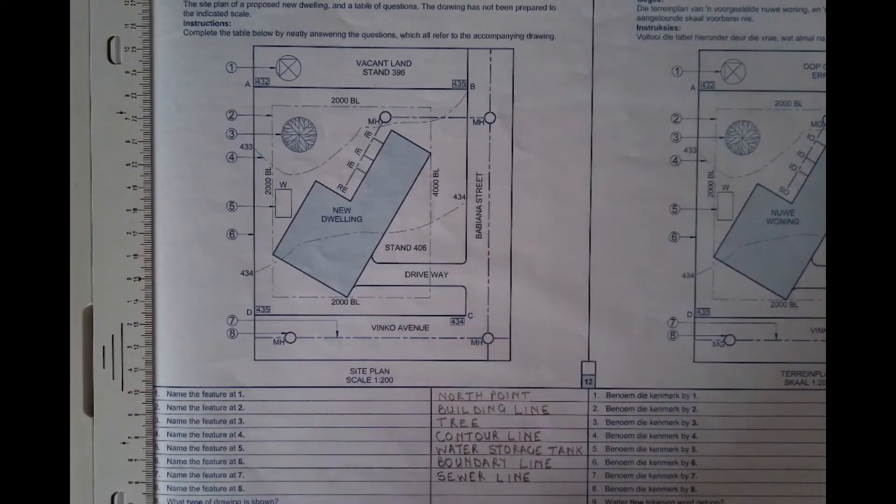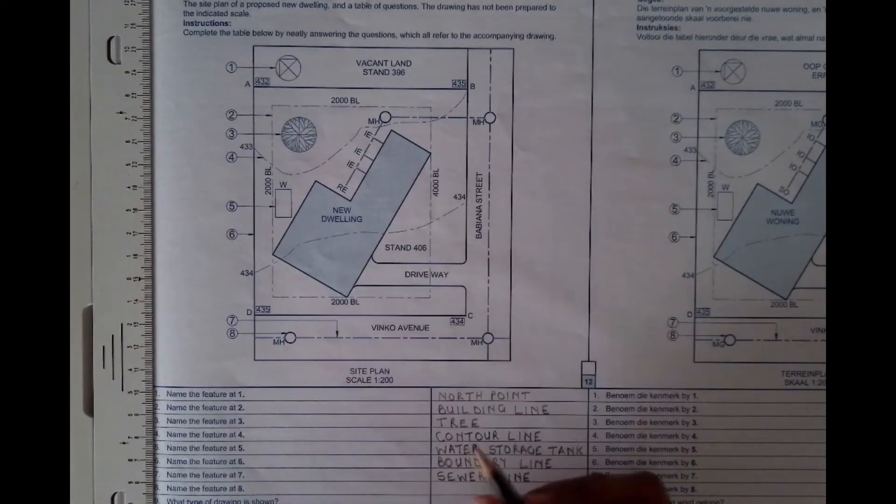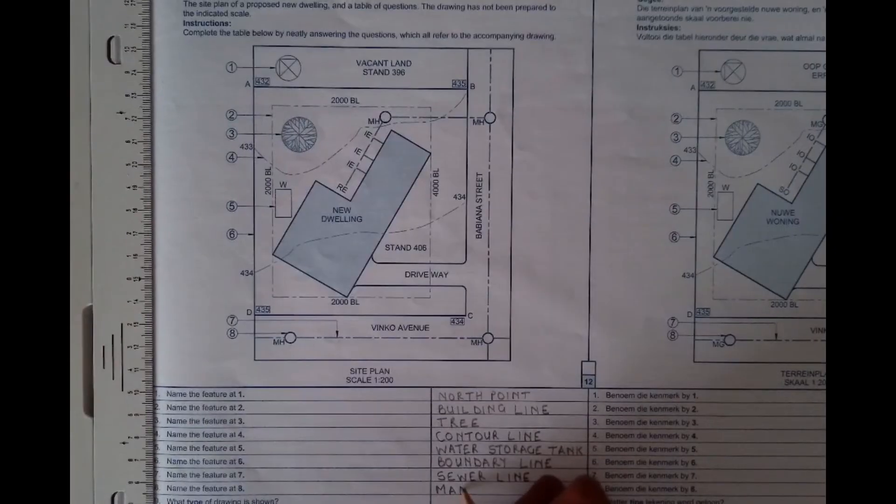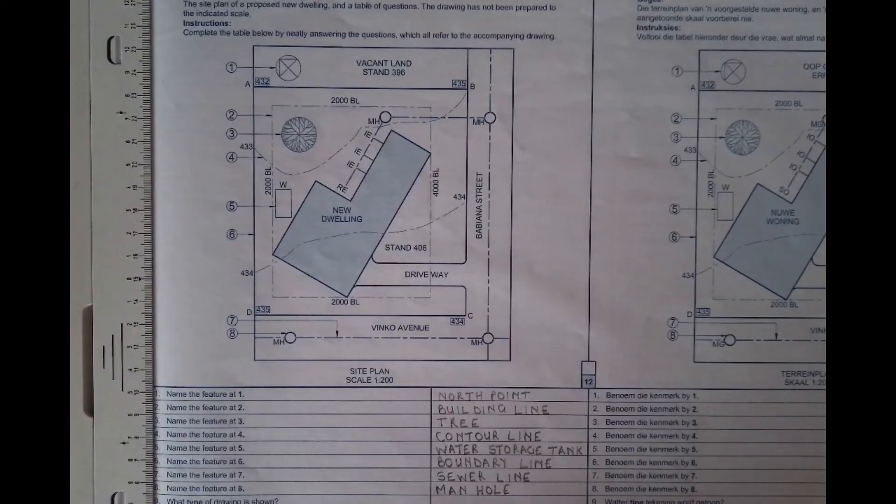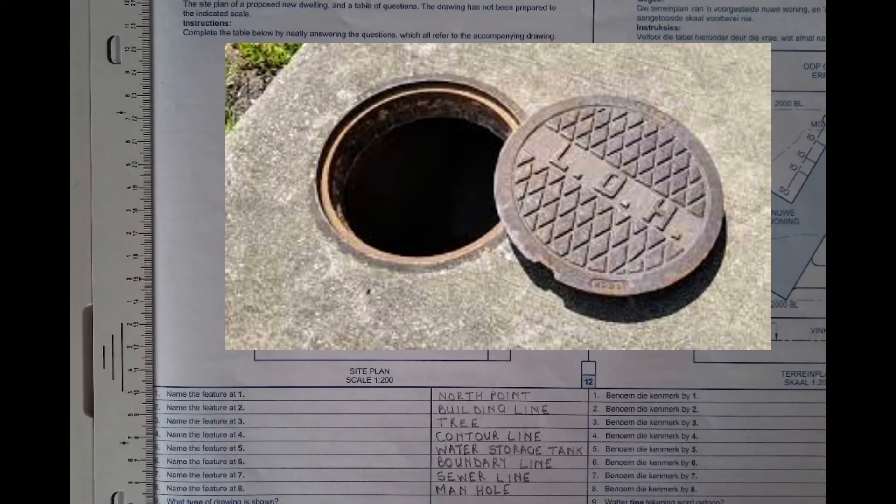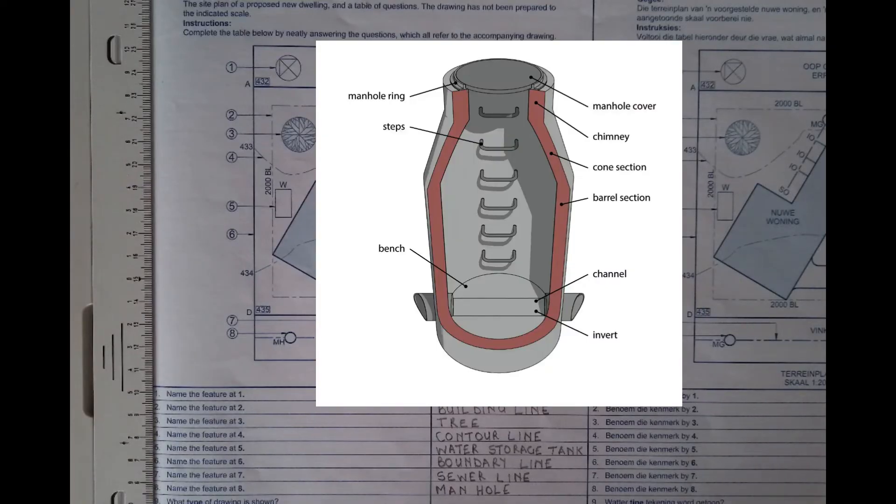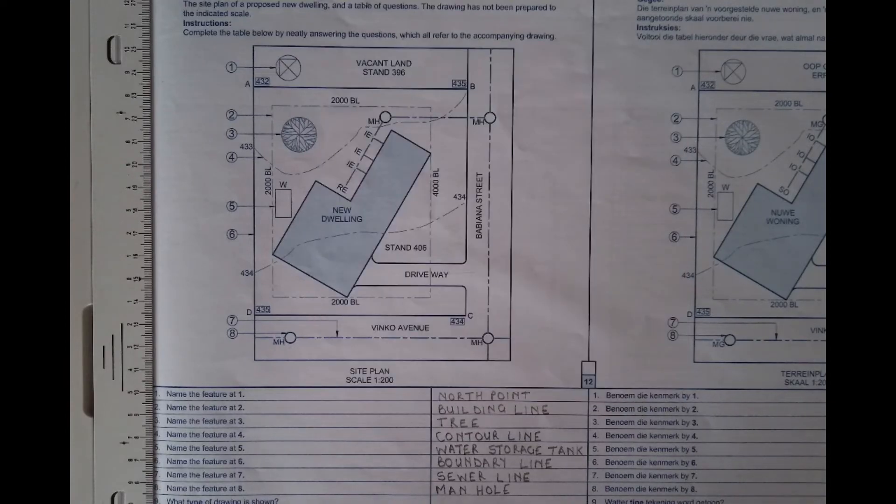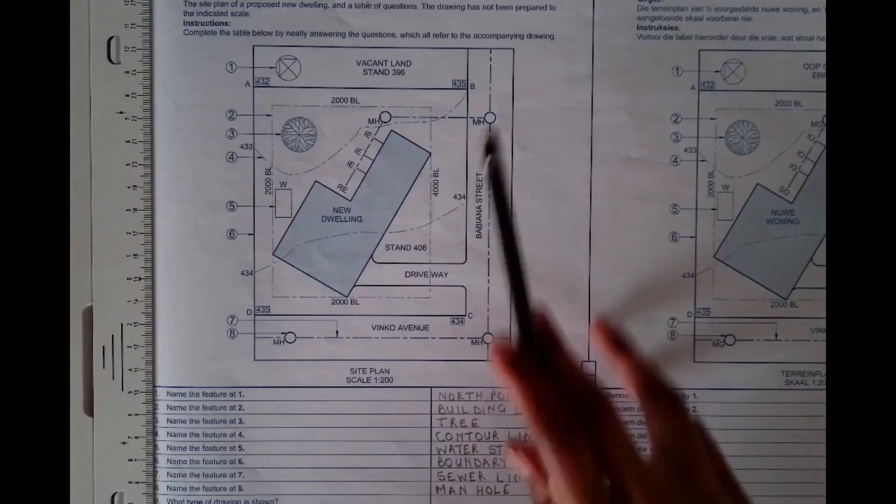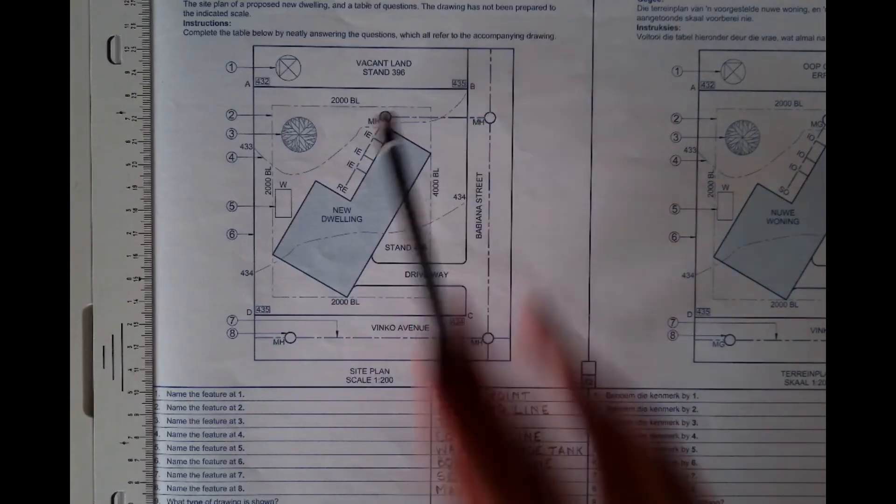And then the feature at eight, you can see it's MH. It is known as manhole. And as you can see on this picture that is attached here, it is a small covered opening in a paved area. And it allows access to beneath, so to the underground, especially if it's leading to a sewer line. So that is the purpose of a manhole. You can see everywhere where your sewer line is, there is a manhole that is connected there.